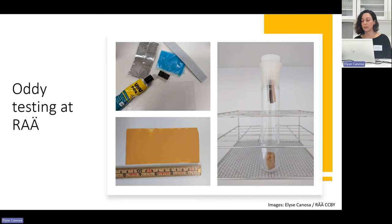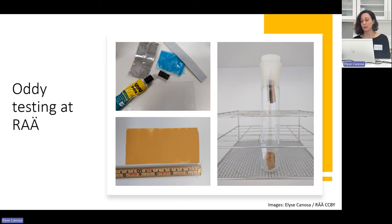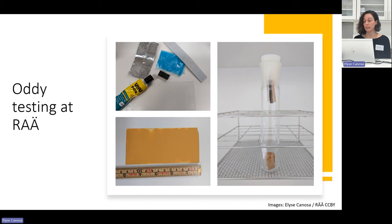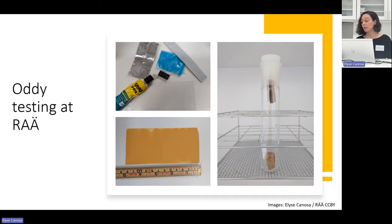When preparing materials for testing, we try to prepare them in a way representative of how the material is used in practice — how it's used in display or storage — with the limitation that it must fit inside the glass tube. For example, we cut solid boards into blocks, papers and textiles into strips. Tapes can be adhered to themselves or to a sheet of Melinex or Mylar. Wet materials like adhesives or paints require a drying time, which we try to reflect based on how they're used in museum environments. Paints are made into thin layers on Melinex and allowed to dry for four weeks before testing, while adhesives or sealants are dried according to manufacturer instructions, or for 48 hours if there are no instructions.